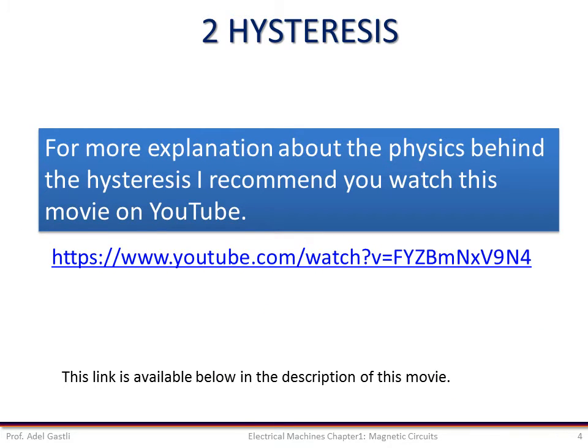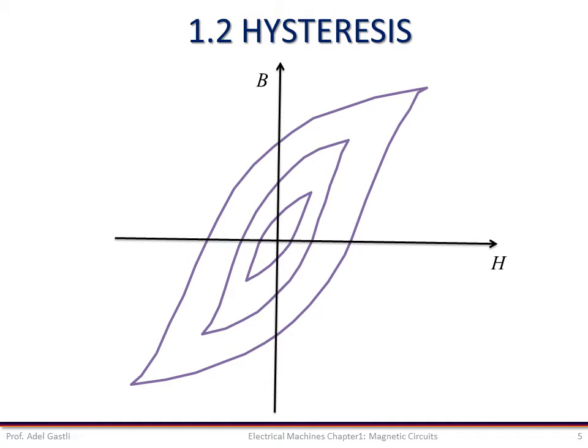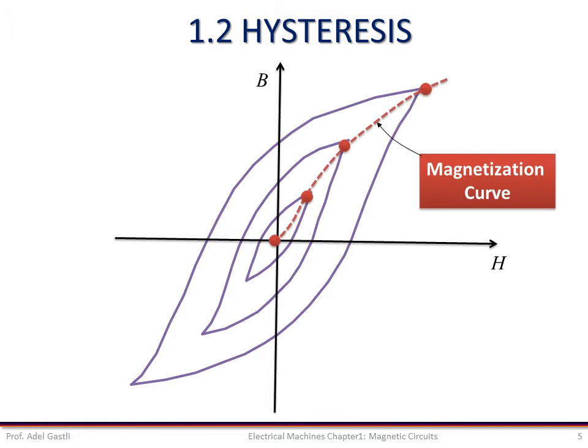For more explanation about the physics behind hysteresis, I recommend that you watch the linked movie on YouTube. Smaller hysteresis loops are obtained by decreasing the amplitude of variation of the magnetic flux intensity. The locus of the tip of the hysteresis loops, shown in dashed lines, is called the magnetization curve. For some magnetic cores, the hysteresis loop is very narrow and the hysteresis effect is neglected, so the BH characteristic is represented by just the magnetization curve.